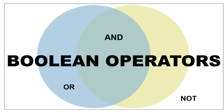We're going to talk now about Boolean operators. Basically, think of them like the word equation tools that we're going to be using. So it's AND, OR, or NOT.